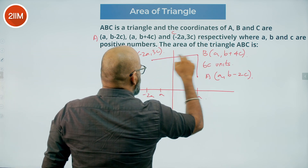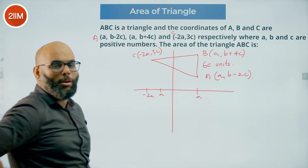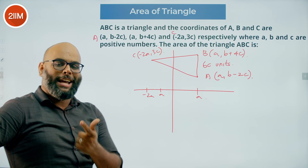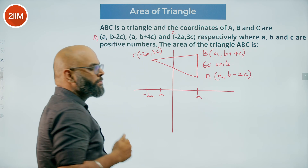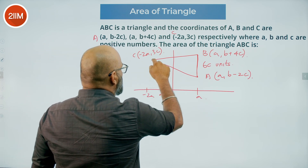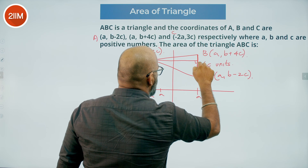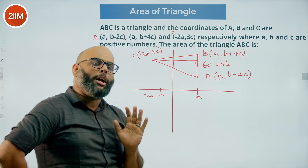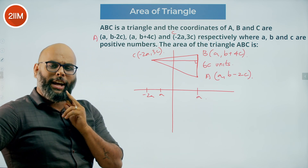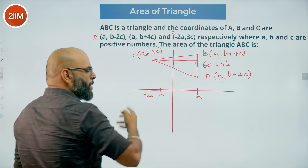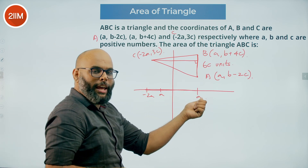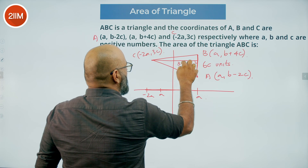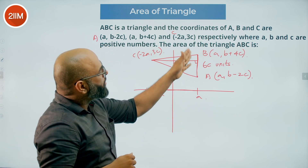If I connect all three vertices, this is how the triangle is going to look. We need to find the area, and for that we need base and height. Let's say the base is the side from A to B. The corresponding height is from point C perpendicular to BA. I already have the base as 6C units. The height runs from x = A out to x = minus 2A, which is definitely 3A units.